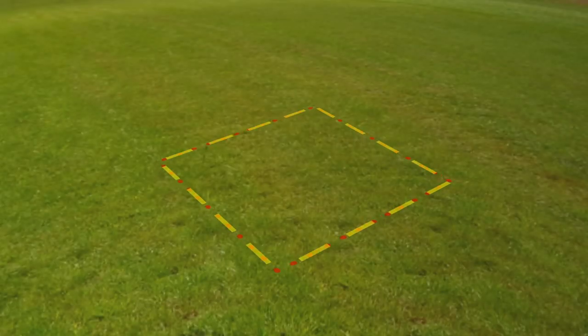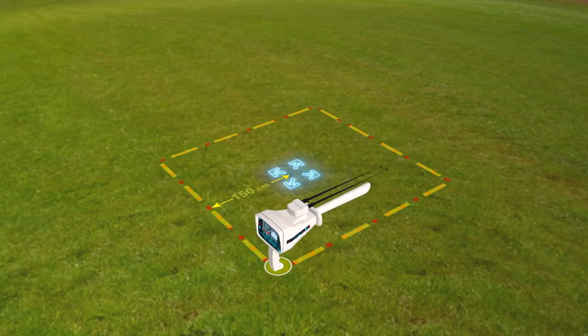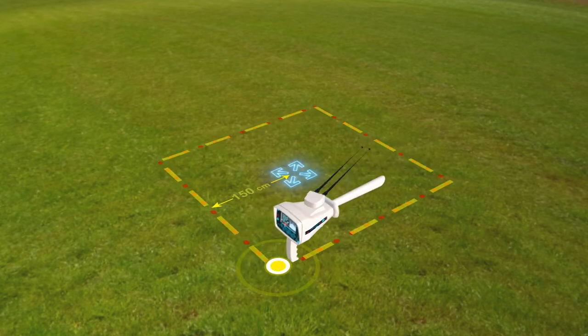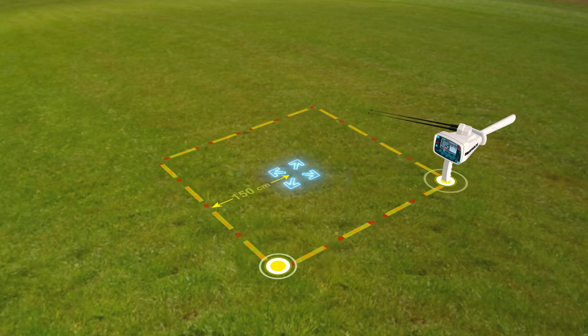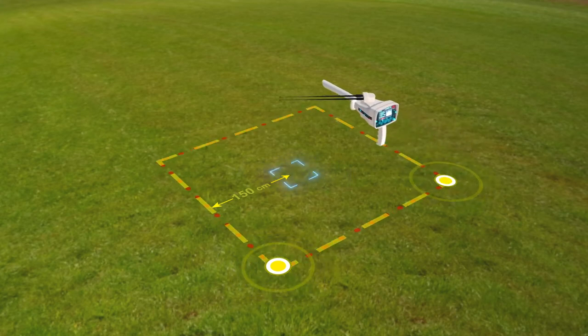The user draws a square around the target that was previously found at a distance of 150 centimeters from the center. The user then moves towards the second point of the square so that the antennas move towards the target while moving from one point to another in the square.